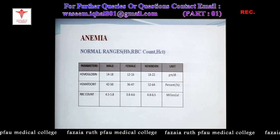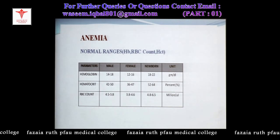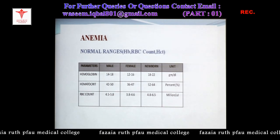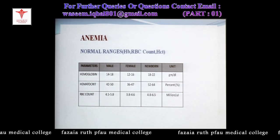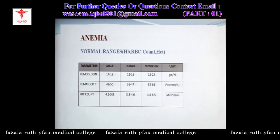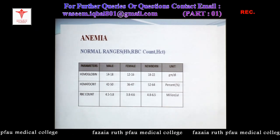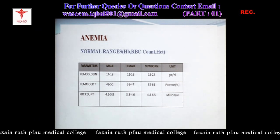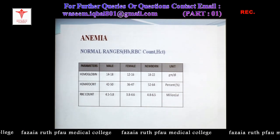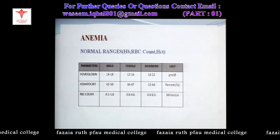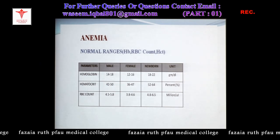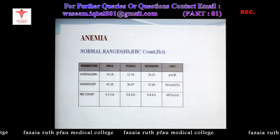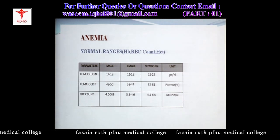Hemoglobin normal range: adult male 14–18 g/dL (sometimes cited as 13.5–18), females 12–16 g/dL, and newborn 18–22 g/dL due to high RBC count. Hematocrit: adult male 42–50%, females 36–47%, newborn 52–64%. RBC count: adult males 4.5–5.8 million per microliter, adult females 3.8–4.6, and newborn 4.8–6.5 million per microliter.